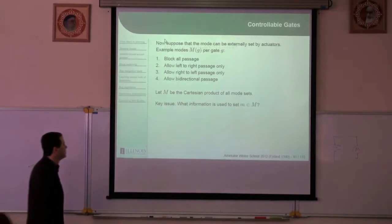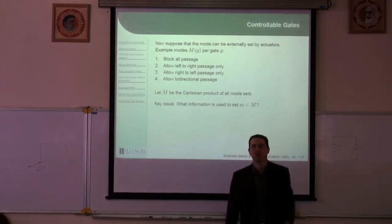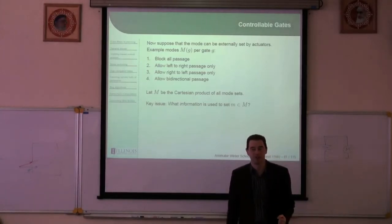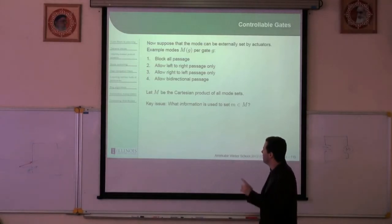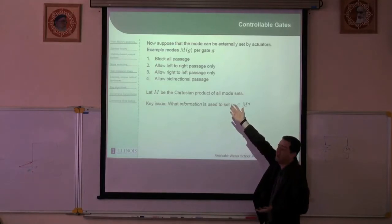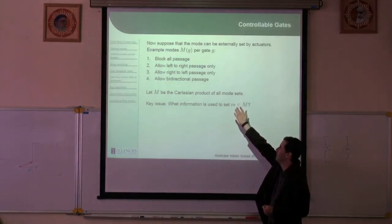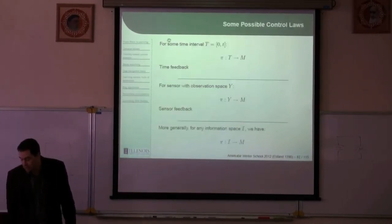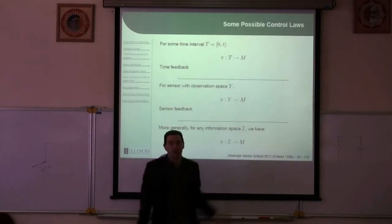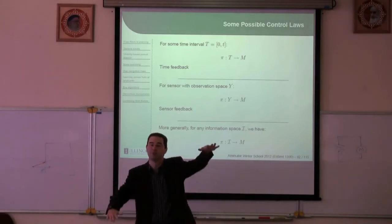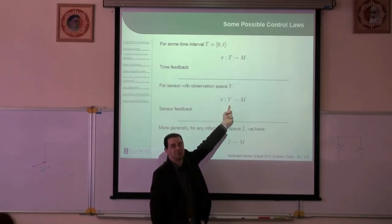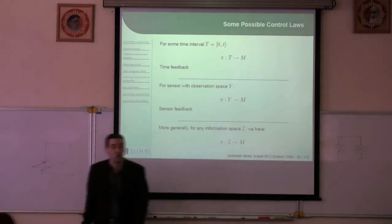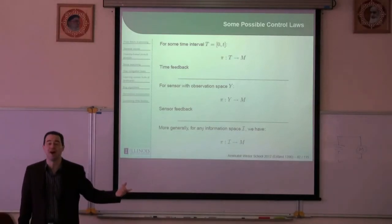We made controllable gates where we actually have actuators — motors that change the mode based on decisions in the environment. The modes could be block, passage, allow left to right, allow right to left, or bidirectional. We have a mode space and we have to ask what information we use to set the modes. I could use timing, or sensor feedback with sensors placed along the gates, or any information space we want. Design a simple filter and use it for feedback to control the modes — and when you control the modes, you control the bodies.